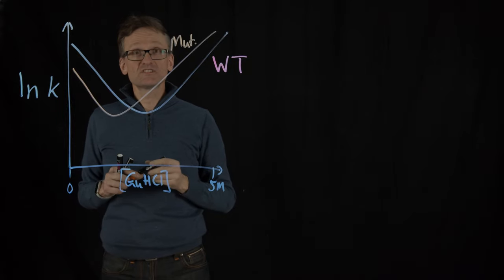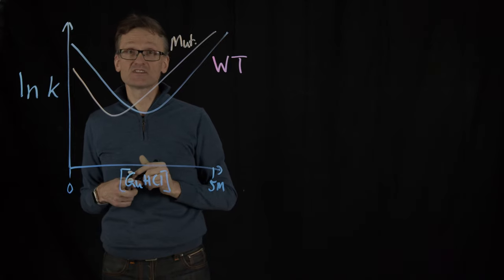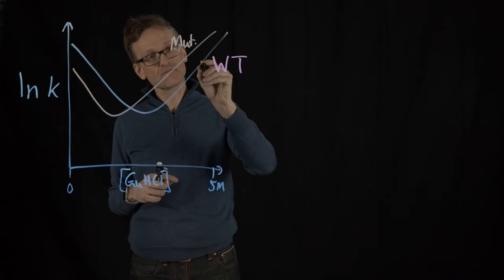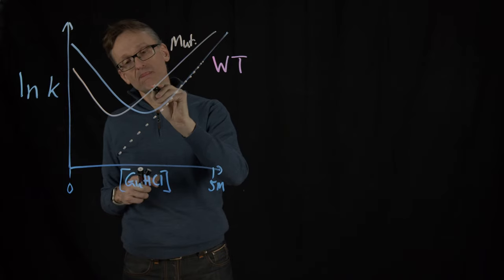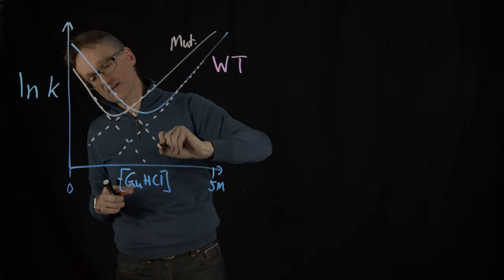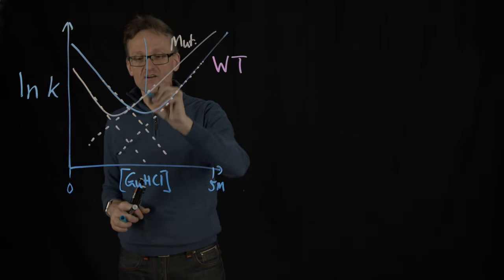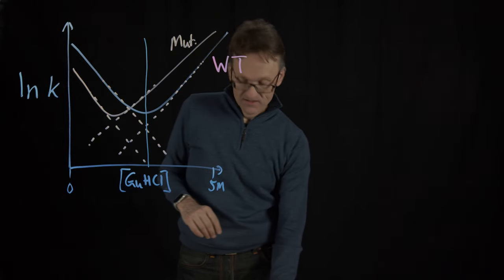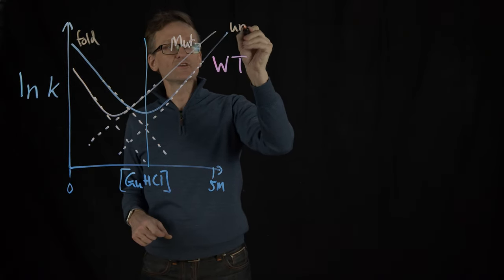And now there are several slopes here. Remember all these slopes, they were related to the free energies and the energy barriers, right, energy barriers in particular. So what if we look at them, and I'm particularly going to look at them at the half point of the original transition here.